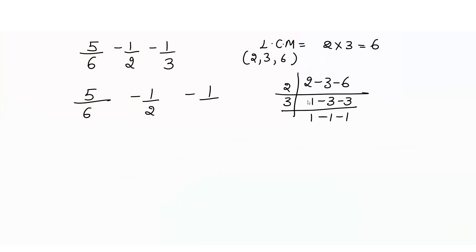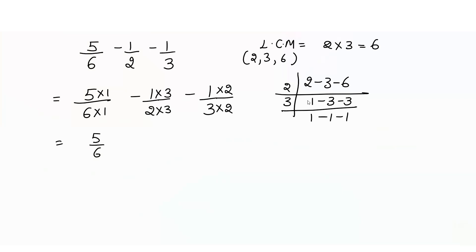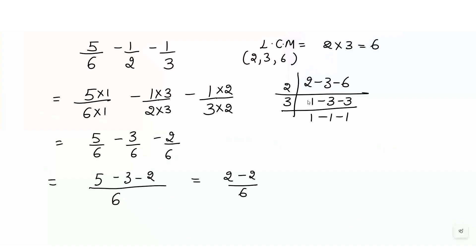We write 5 over 6 minus 1 over 2 minus 1 over 3. The first fraction already has denominator 6, so we times it by 1. For the second, multiply by 3 to get denominator 6. For the third, multiply by 2 to get 6. We get 5 over 6 minus 3 over 6 minus 2 over 6. Writing numerators: 5 minus 3 is 2, then minus 2 over 6. So 2 minus 2 equals 0 over 6, which equals 0. The answer is 0.